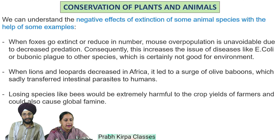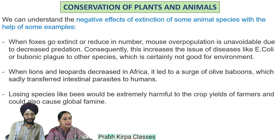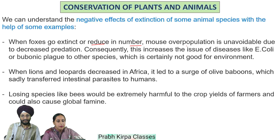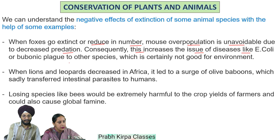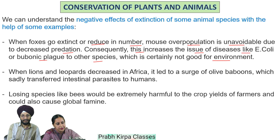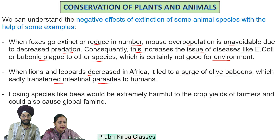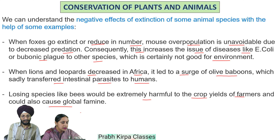We can understand the negative effects of extinction with examples. When foxes go extinct or reduce in number, mouse overpopulation is unavoidable due to decreased predation, which increases the risk of diseases like E. coli or bubonic plague. When lions and leopards decreased in Africa, it led to a surge of olive baboons which transferred intestinal parasites to humans. Losing species like bees would be extremely harmful to crop yield and could cause global famine.